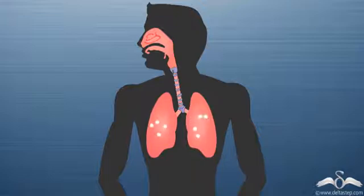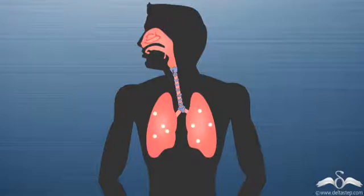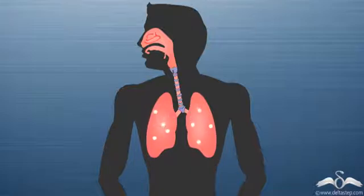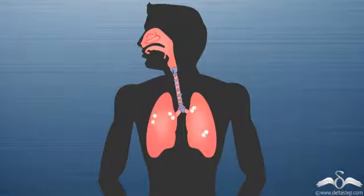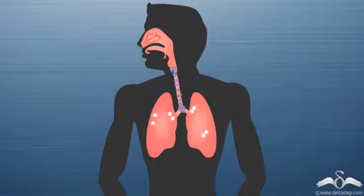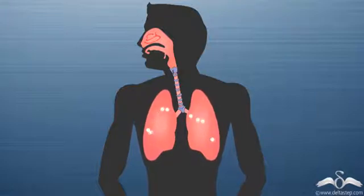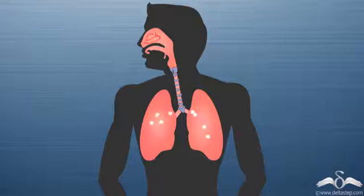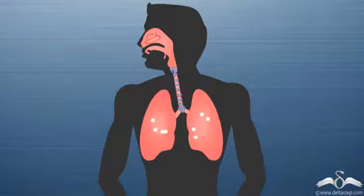Now let us see what happens when the inhalation process starts in the lungs. An interesting fact is that during inhalation, the lungs do not get inflated due to air inflow but by the action of different internal muscles, which facilitate the air to be drawn from outside to inside. When the lungs inflate due to muscle action, the lung volume increases, but the number of air molecules does not increase because air has not yet been taken in.